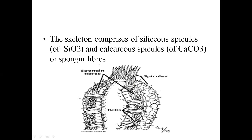The skeleton of porifera is made of siliceous spicules, formed from silica, and calcareous spicules, formed from calcium. Spongin fibers are also present. Together, the spongin fibers and spicules form the internal skeleton.